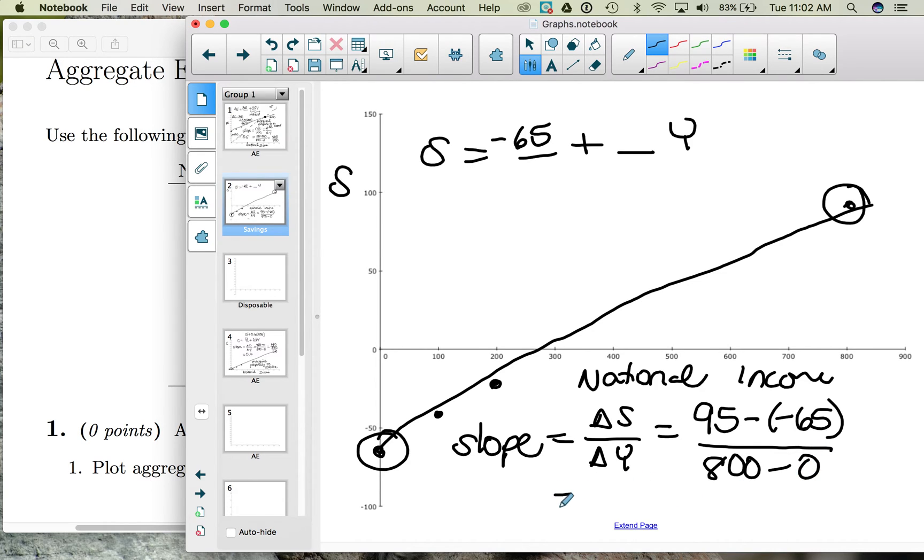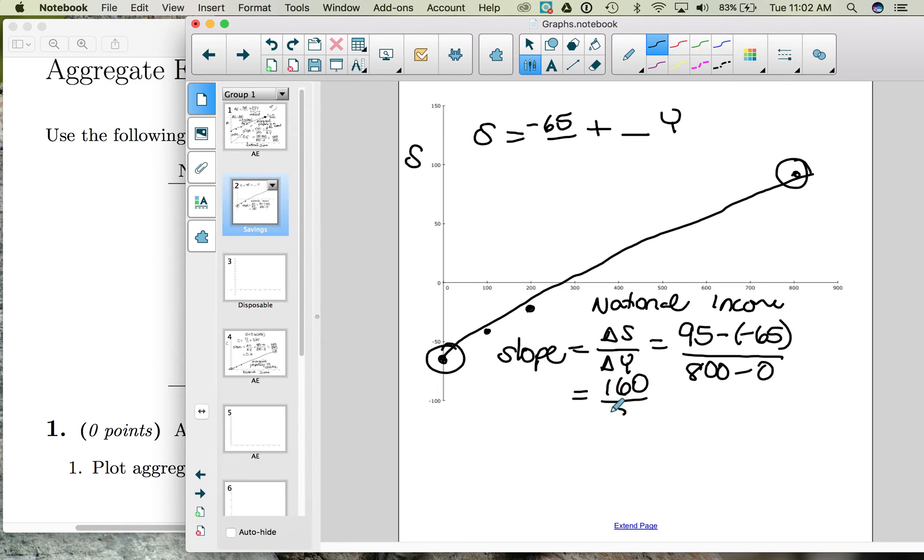So our slope here, 95 now plus 65, is 160. The change in income is 800. 160 divided by 800 is 0.2.